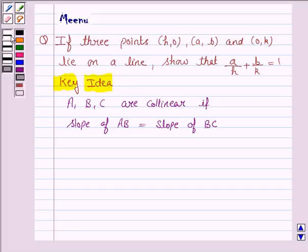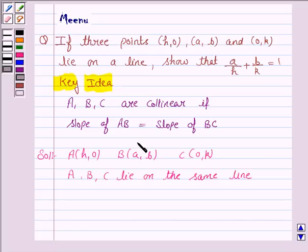Let us now proceed with the solution. The given three points are A(h,0), B(a,b), and C(0,k). If these three points lie on the same line, that means they are collinear.